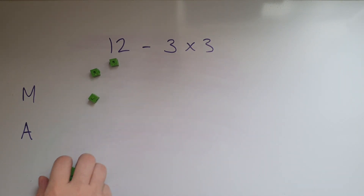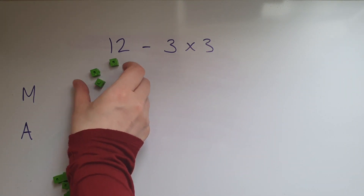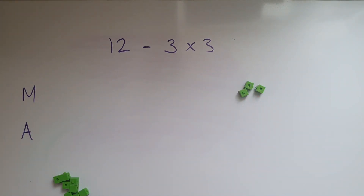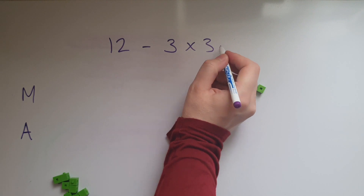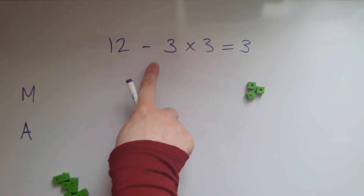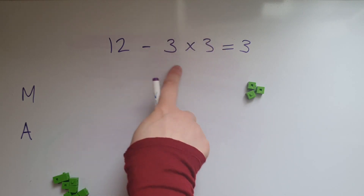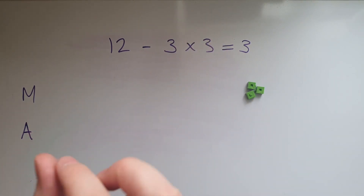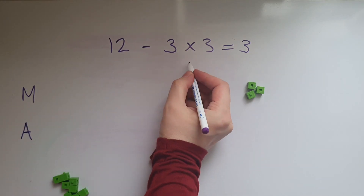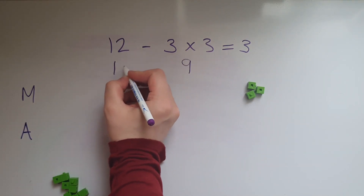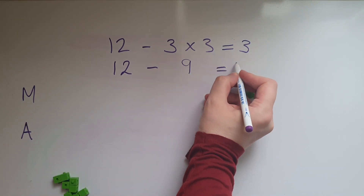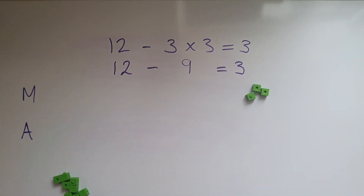So I'm taking that away — 3 lots of 3 is 9. What am I left with? Just 3 as the answer. When it comes to multiplication, we're creating those blocks — 'lots of'. So 3 lots of 3 is 9, and we're saying 12 take away 9, which is equal to 3.